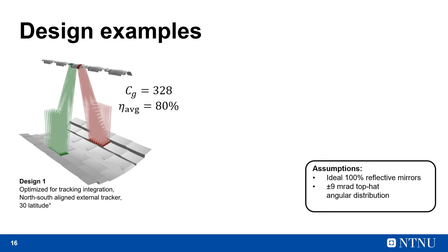This concentrator achieves a geometric concentration of 328 at an average yearly efficiency of 80%. That is much more than what a two-dimensional concentrator could achieve. So the answer seems to be yes it works, at least in simulation.